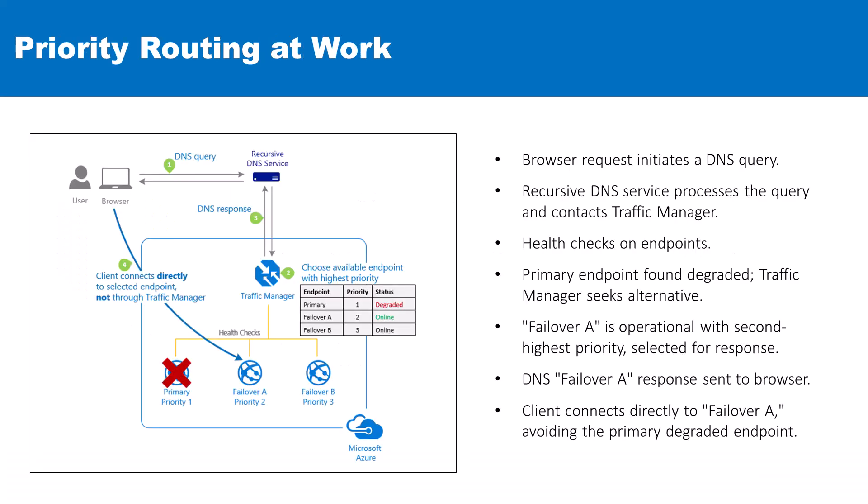Now, take a look on your screen. In this diagram, we're looking at the priority routing method of Azure Traffic Manager. When a user makes a request through their browser, a DNS query is initiated. This query is processed by a recursive DNS service, which then requests the Traffic Manager for the best available endpoint.